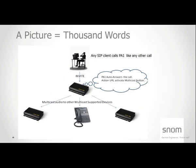A picture is always worth a thousand words, and the PA1 is a very simple system. In this diagram, you can see the PA can serve as what we call a multicast server. You can assign a single PA four different extensions — let's call them 101, 102, 103, and 104 for simplicity.